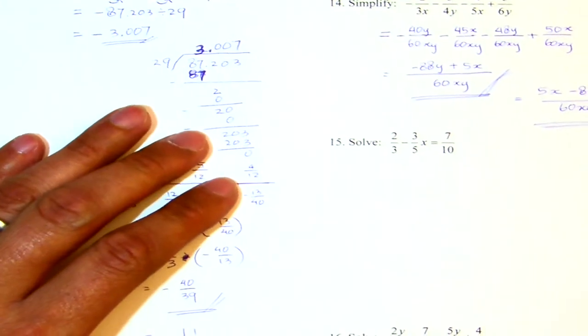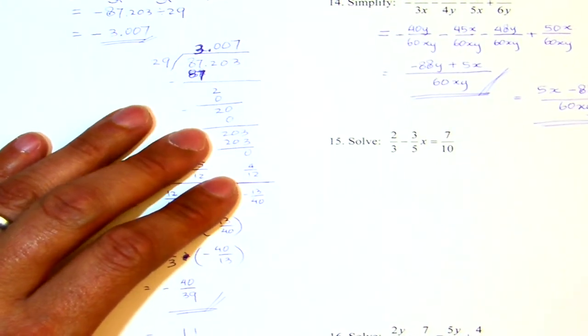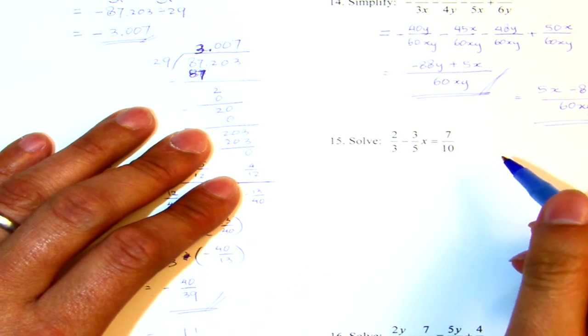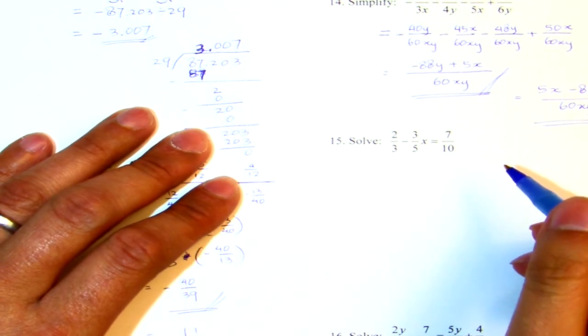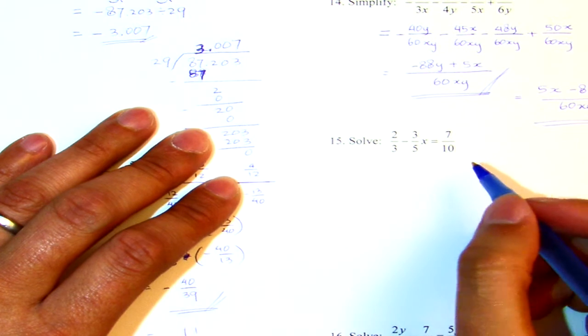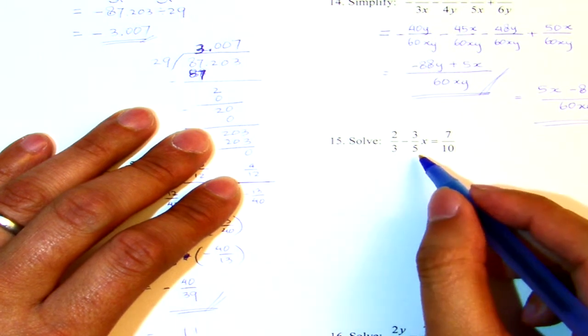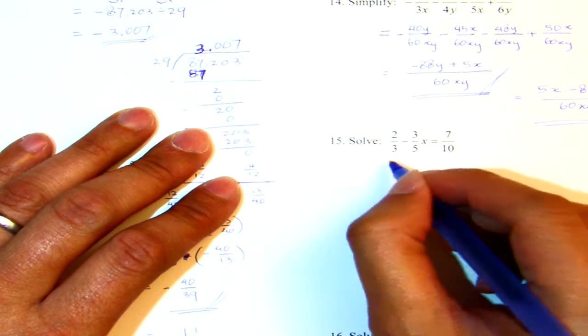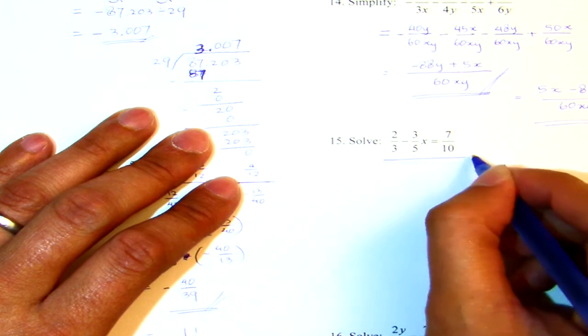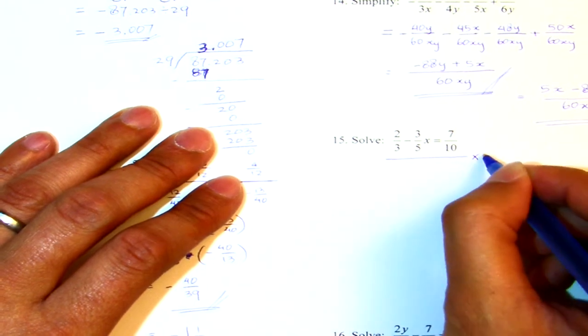Now, number 15. 2 thirds minus 3 fifths x equals to 7 tenth. What is the LCD? 3 and 5 is 15. 15 and 10 is 30. I think that's pretty small. So let's use LCD method. I multiply this by 30.